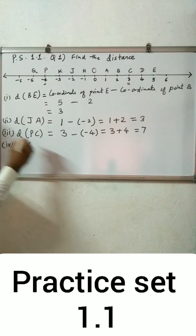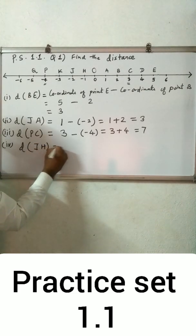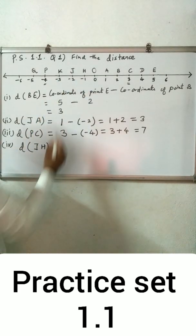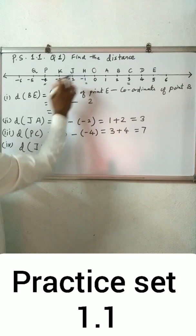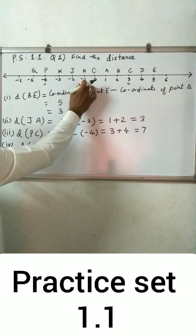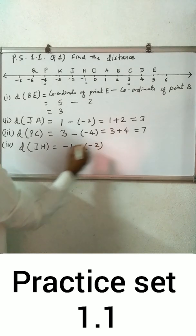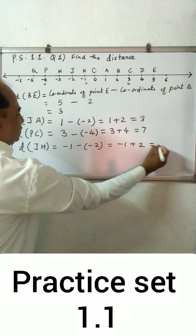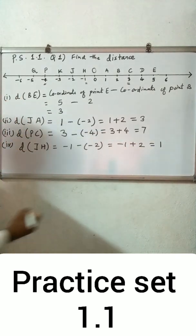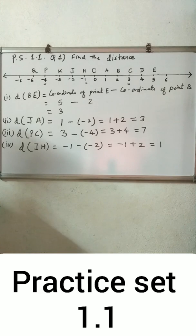Fourth, find distance JH. Coordinate of J is minus 2 and coordinate of H is minus 1. Since minus 1 is on the right-hand side of minus 2, H is greater. So distance JH equals coordinate of H minus coordinate of J: minus 1 minus (minus 2) = minus 1 plus 2 = 1. Distance is always positive. The remaining examples of question number 1, you will solve in your notebook.